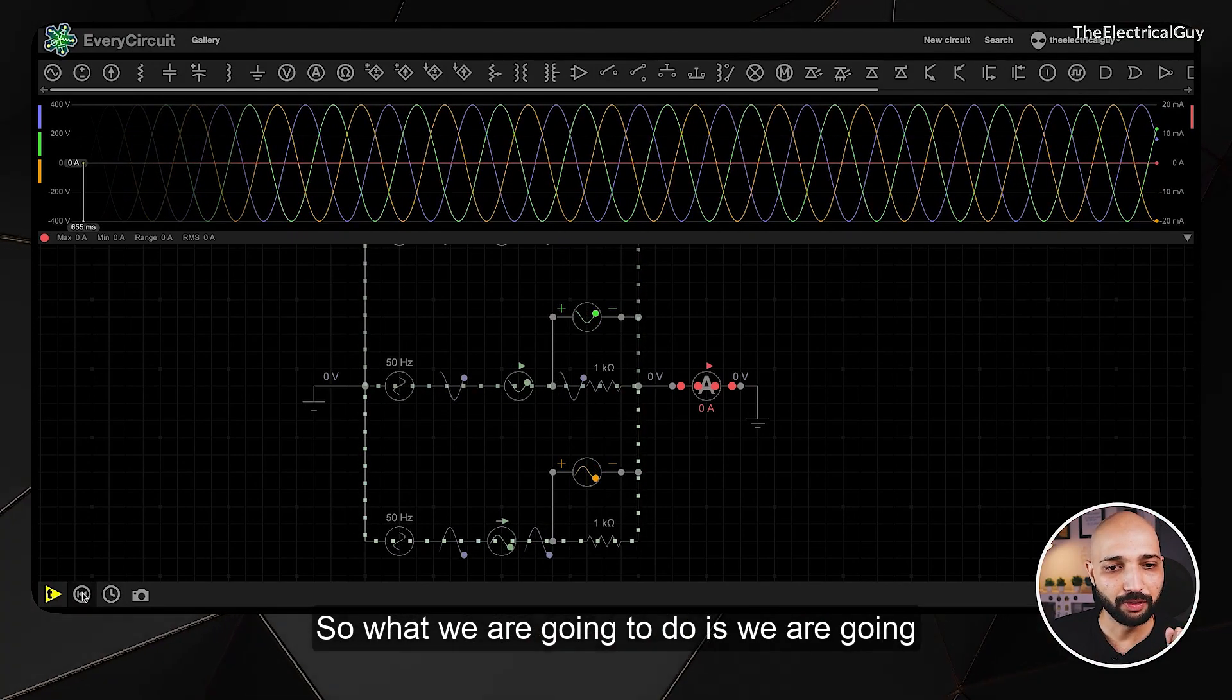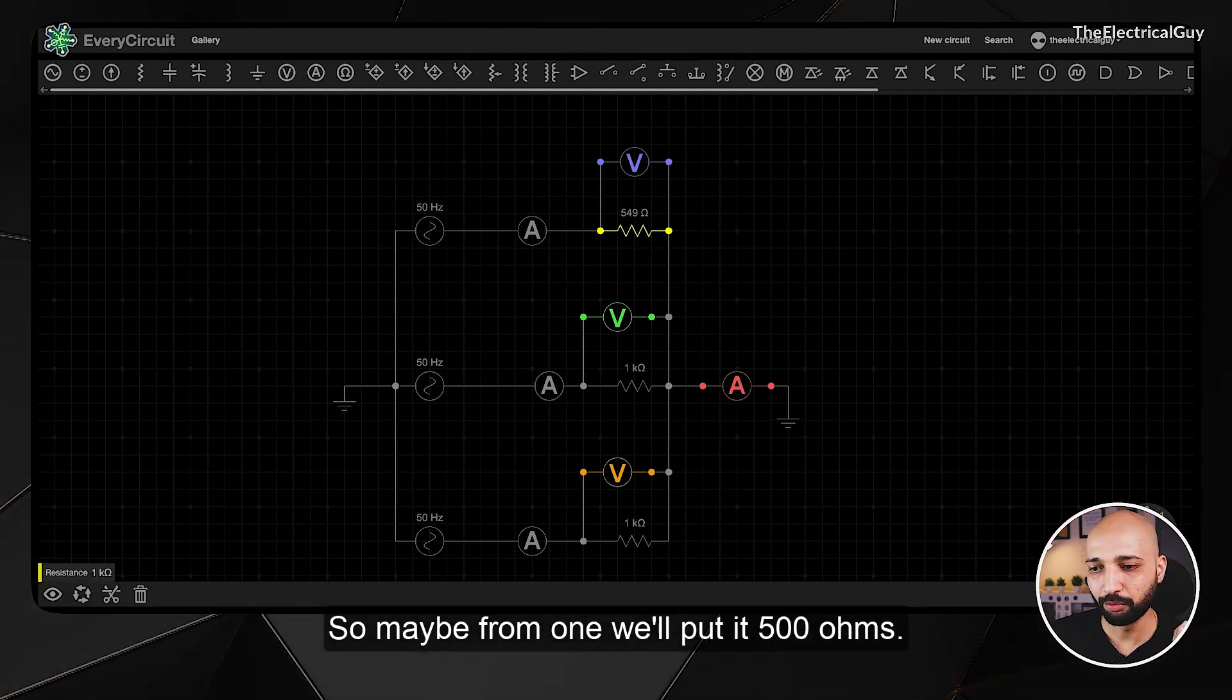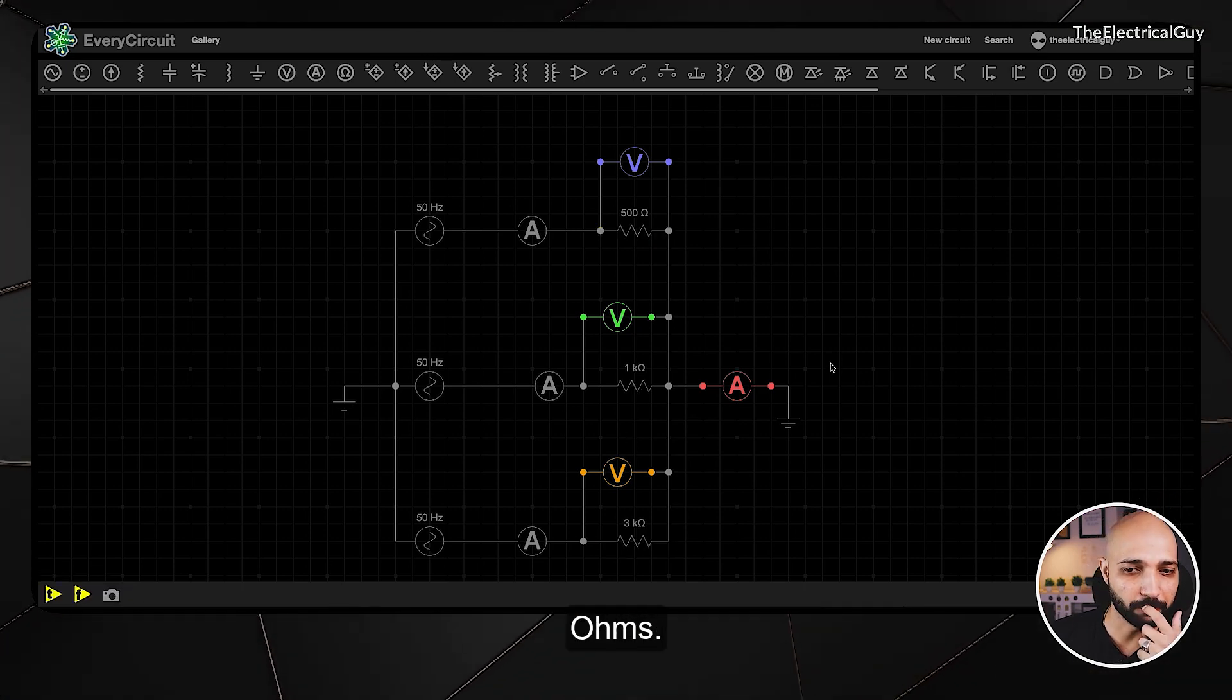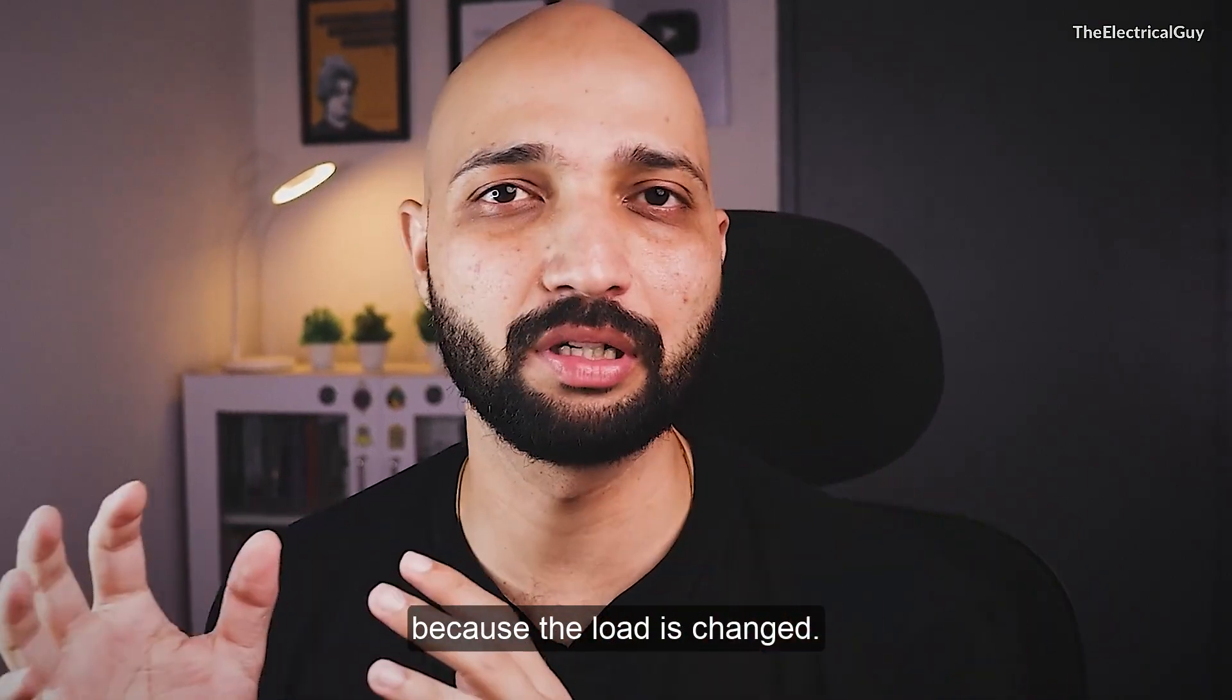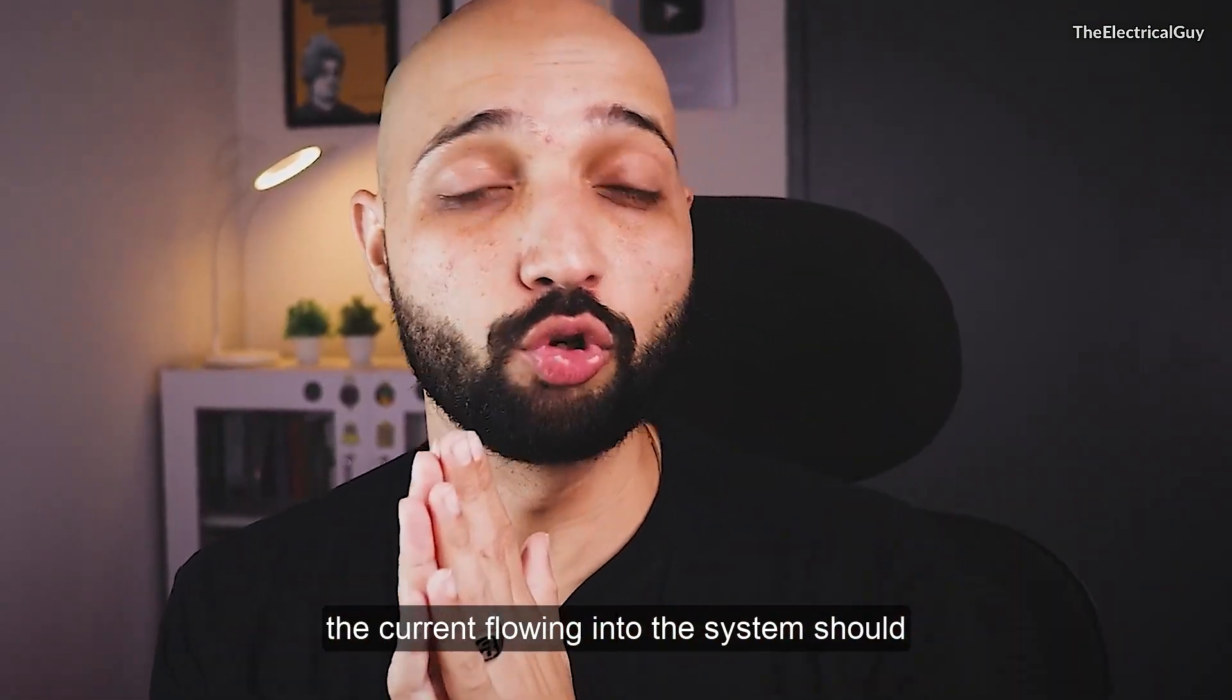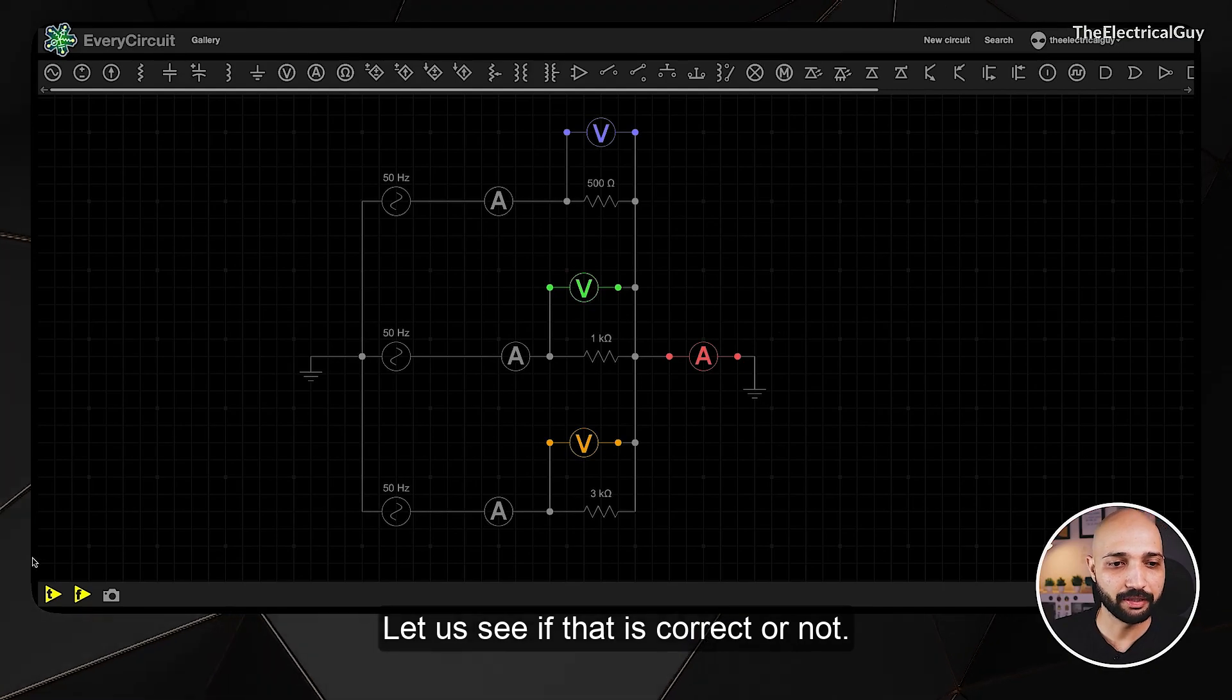Now let us do some interesting things. We are going to disrupt the load. From one ohm, we'll put it to 500 ohms, keep one at one ohm, and change this to maybe three kilo ohms. Now definitely we have disrupted the load. This is no more a balanced system because the load is changed. Since the load is changed, the current flowing into the system should also change and there should be a current in the neutral.